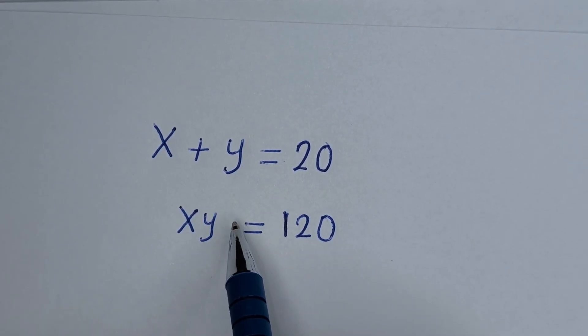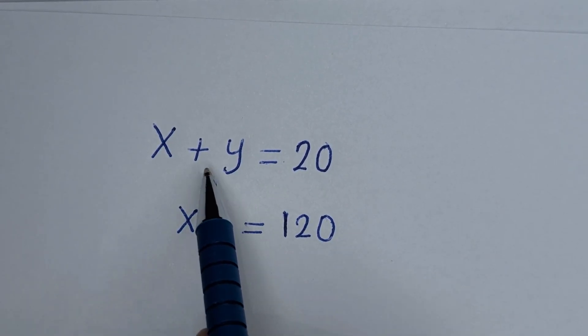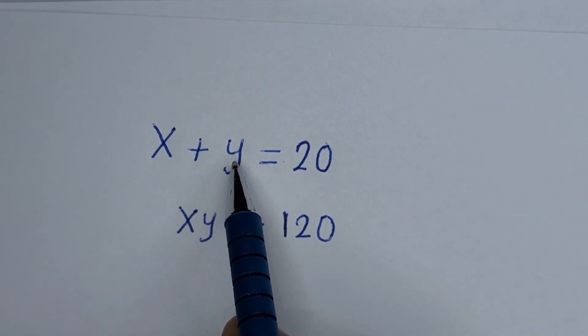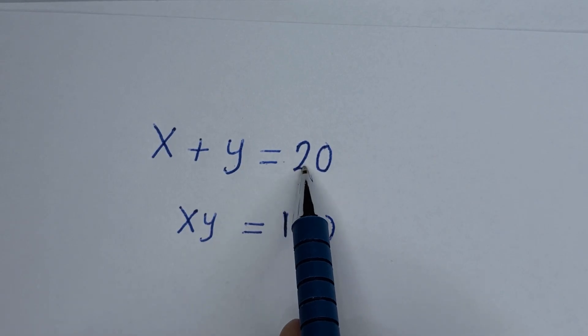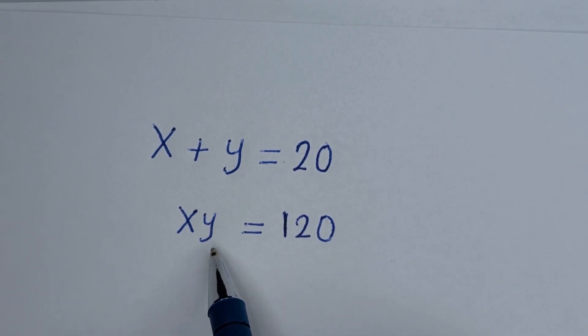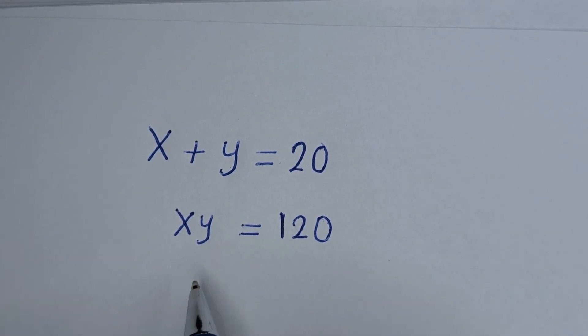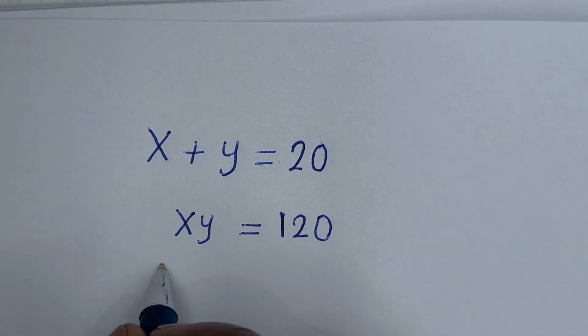Hello, you are welcome. How to solve for x and y in this equation: x plus y is equal to 20, and xy is equal to 120. Solution.